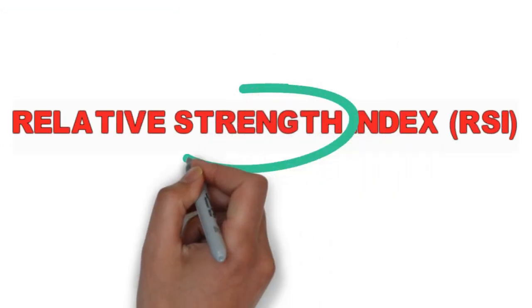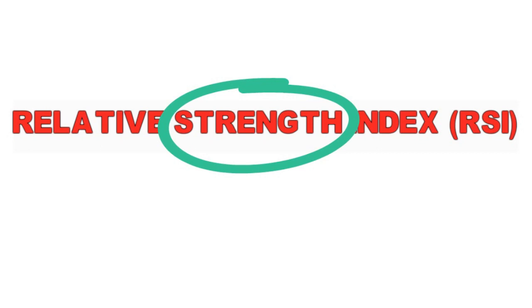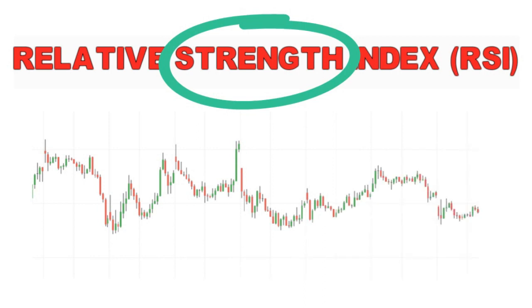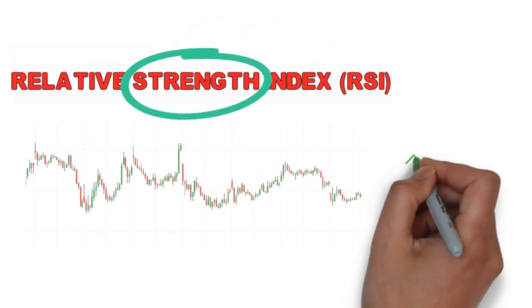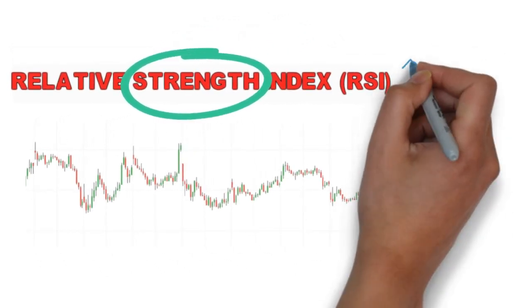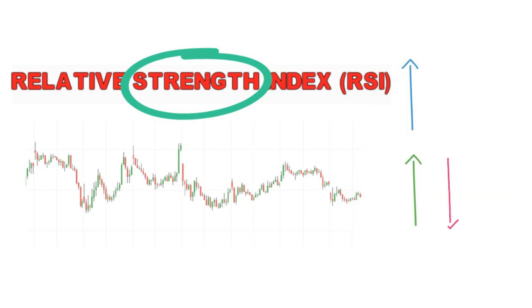Relative Strength Index — this word says 'strength.' Obviously, RSI indicates strength only. Which strength? It's price strength. RSI indicates the price strength and tells us whether the market is moving at speed, slow, or medium. RSI is a momentum oscillator — it studies the price and tells the strength in the price. RSI is directly proportional to the price: if price moves upside, RSI also moves upside; if price falls downside, RSI also falls downside.